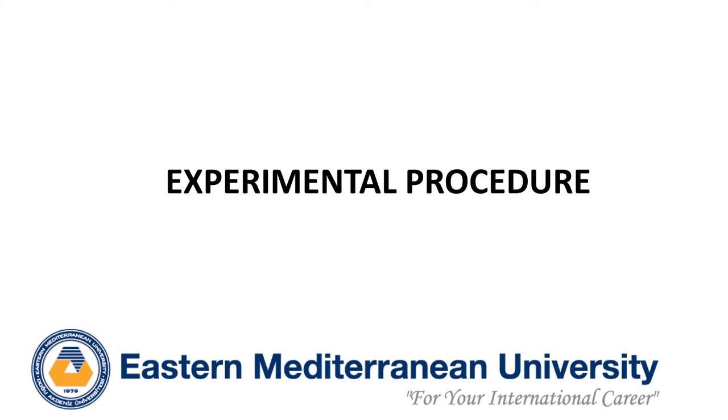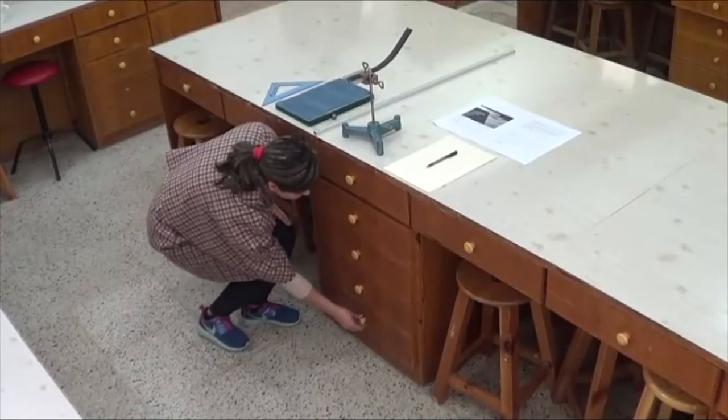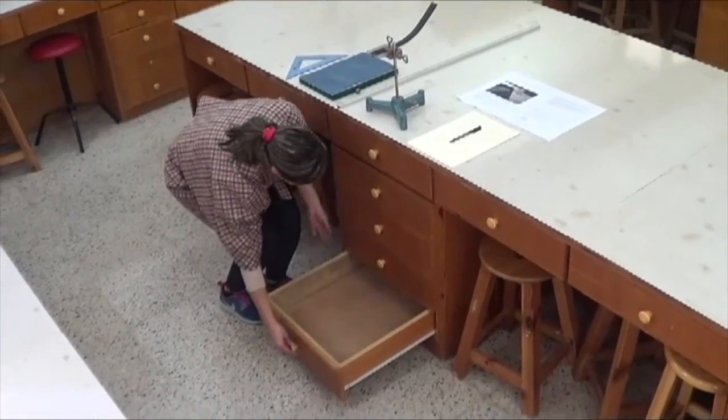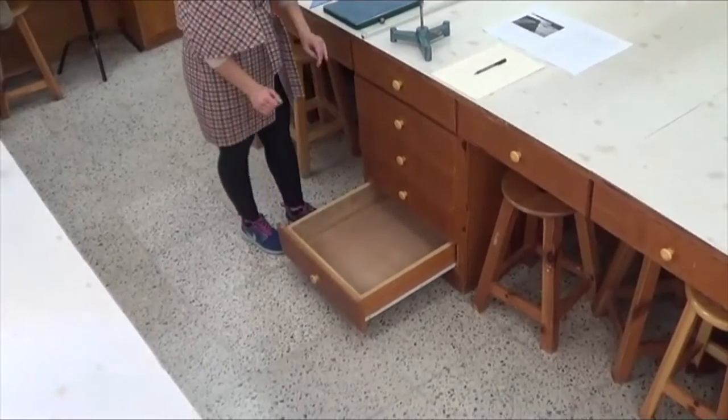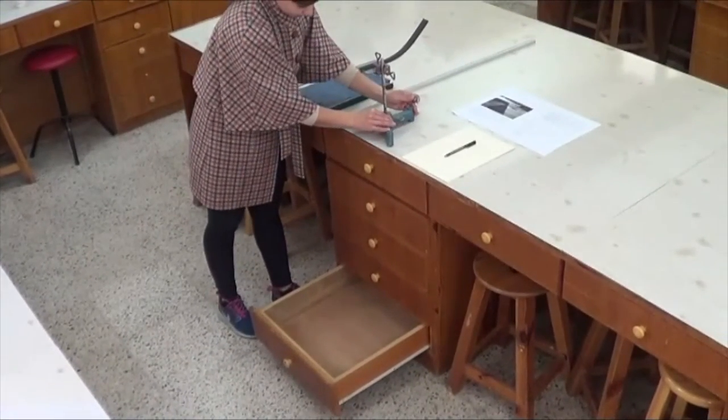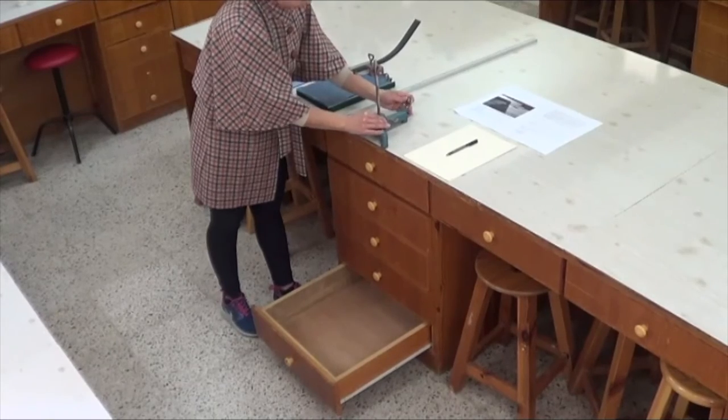So, let us watch the video prepared for the experimental procedure. The first step is to open the fifth drawer and determine the position of the track in such a way that the metal ball falls into it.